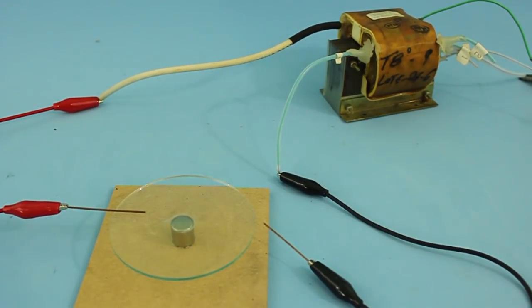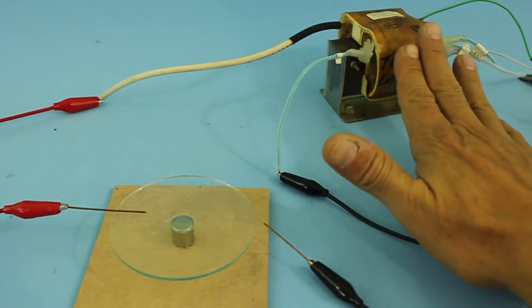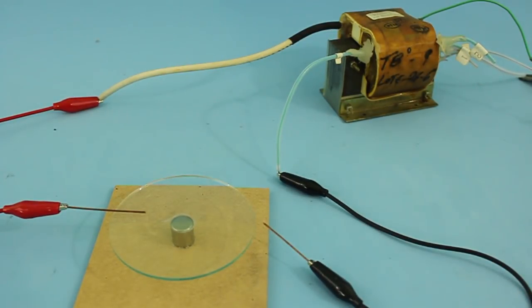Let's now try with AC. I am using this high voltage transformer that I took from a photocopier machine. And it generates 10,000 volts at 60 Hertz.